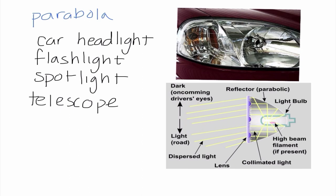So that's what causes a headlight to take up all this space when it actually reflects all that light. This parabolic mirror is also used in spotlights and telescopes and flashlights.